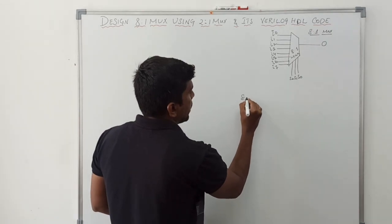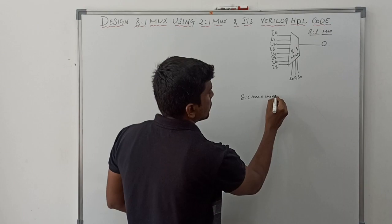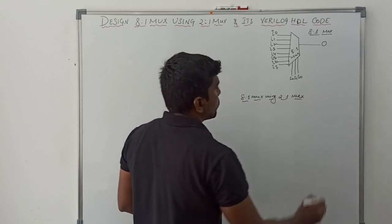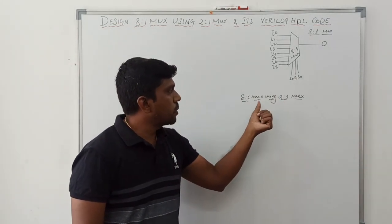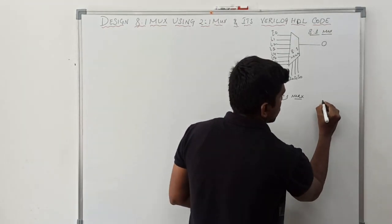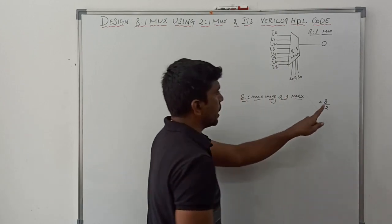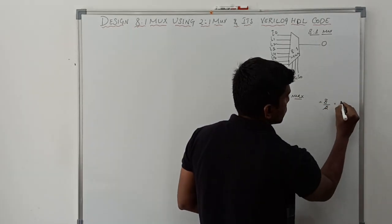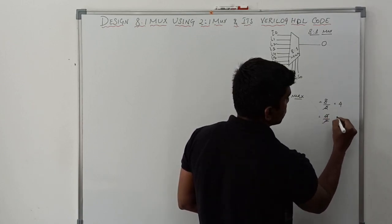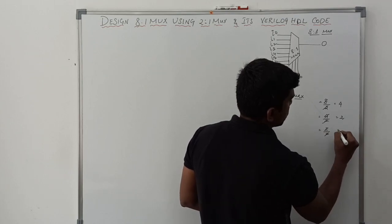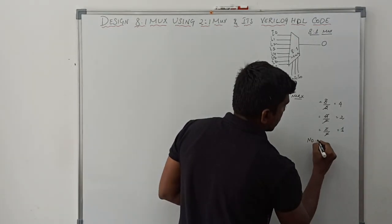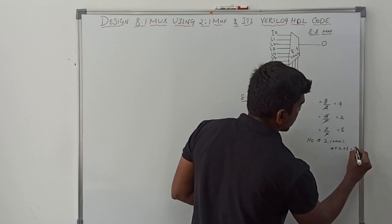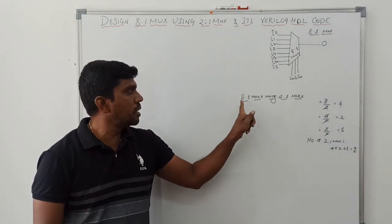Now I am going to design 8-to-1 multiplexer using 2-to-1 multiplexer. First, find how many 2-to-1 multiplexers are required. Simple calculation: 8 divided by 2 equals 4. Then 4 divided by 2 equals 2. Then 2 divided by 2 equals 1. So the total number of 2-to-1 multiplexers required is 4 plus 2 plus 1, which equals 7.